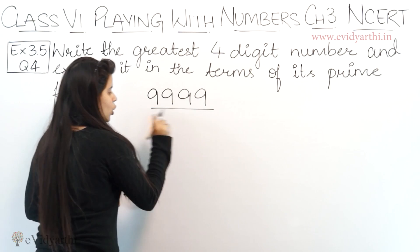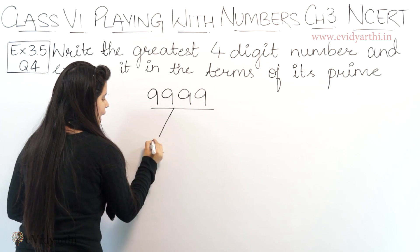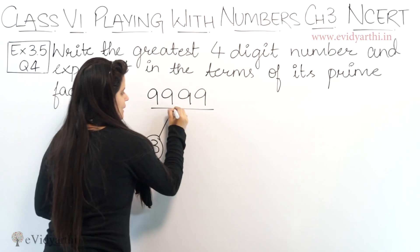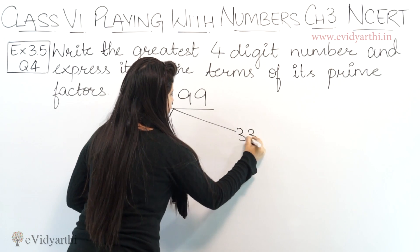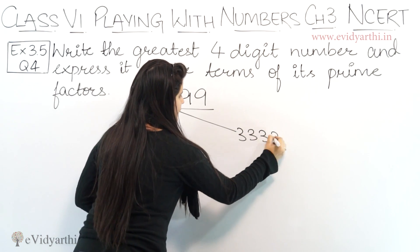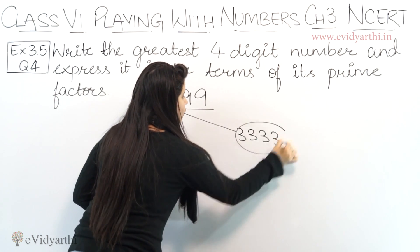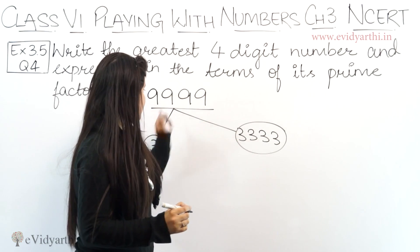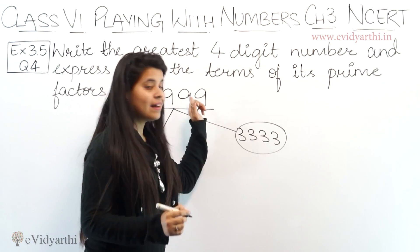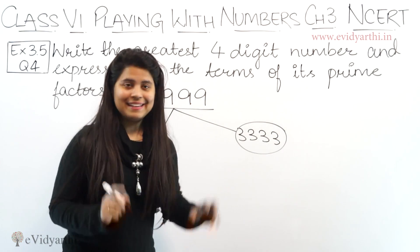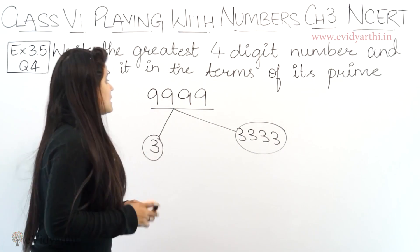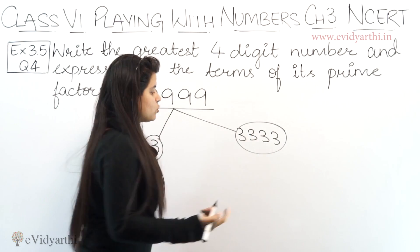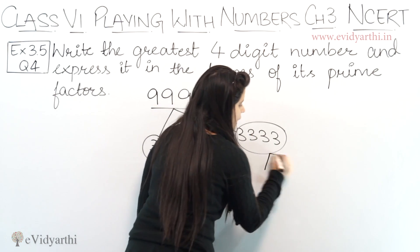Let's divide it into 2 parts. One can be 3 and the other one can be 3, 3, 3, 3. Why? Because 3×3 is 9, 3×3 is 9, 3×3 is 9, 3×3 is 9. Right? Now we have to expand this again.